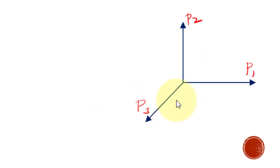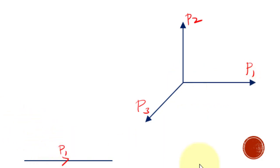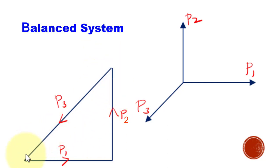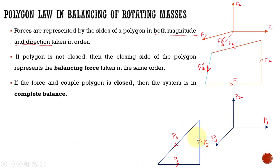Now let us consider another system with three different forces: P1, P2, and P3. I construct the force polygon for this system. The first side represents P1 in magnitude and direction, the second side represents P2 in the same magnitude and direction, and the third side represents P3 in magnitude and direction. You can see that the polygon is closed, so there is no unbalanced force remaining in the system.